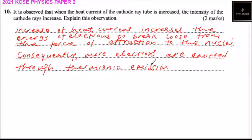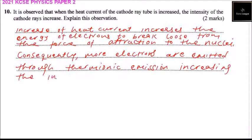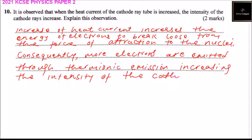More electrons are emitted through thermionic emission, increasing the intensity of the cathode ray. So that's how you answer that question.